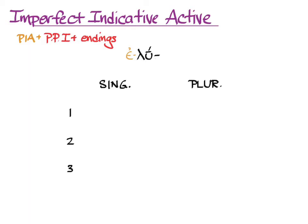Now we need the endings in a chart to put them in, singular and plural, first, second, and third person. Here are the endings of the imperfect singular: on, s, e, which can also have a nu movable. And here are the endings of the plural: omen, ete, on.